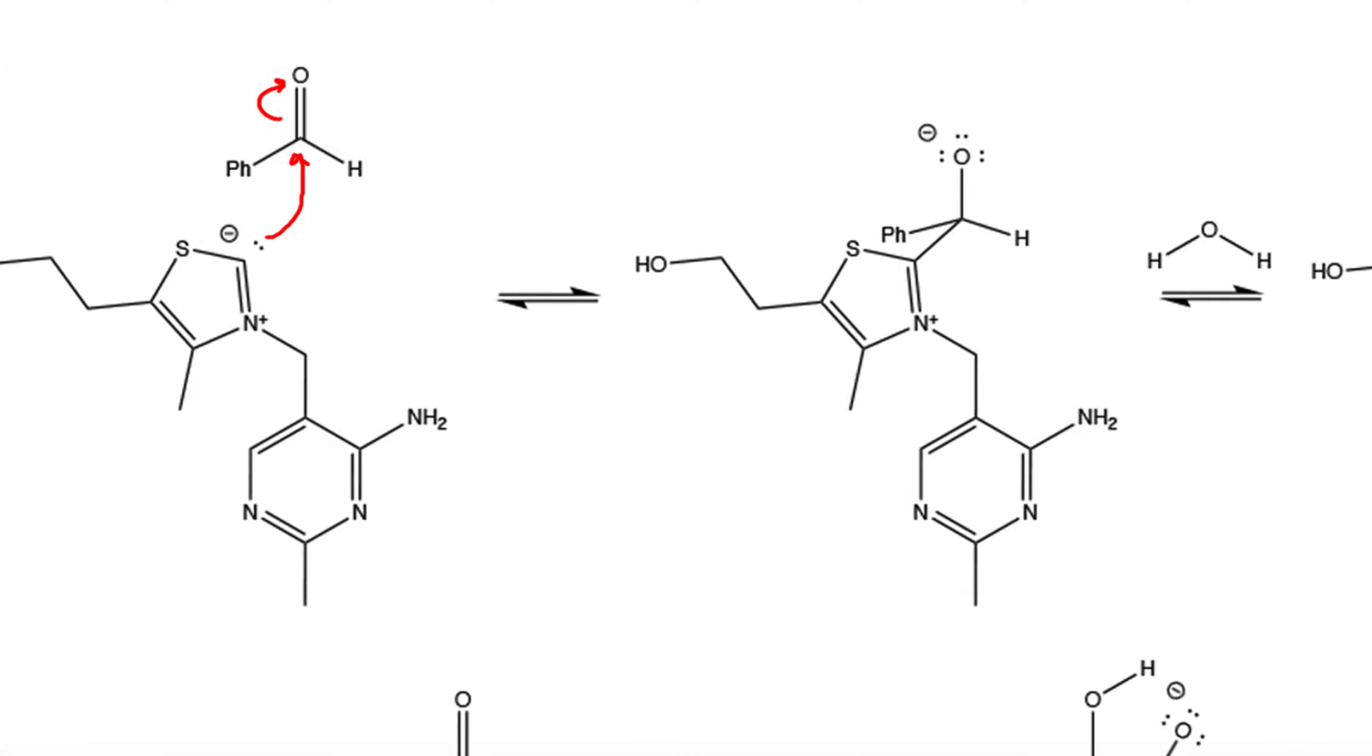We then react the alkoxide ion with water. The lone pairs on this oxygen grab the proton on water, break the bond between hydrogen and oxygen, and the lone pairs get placed onto this oxygen here.